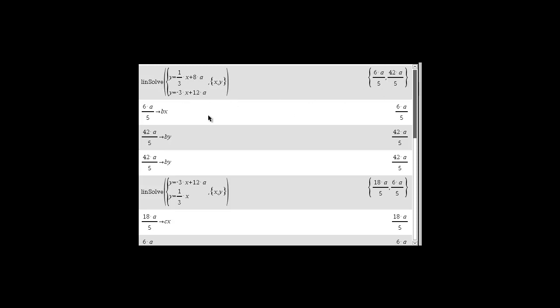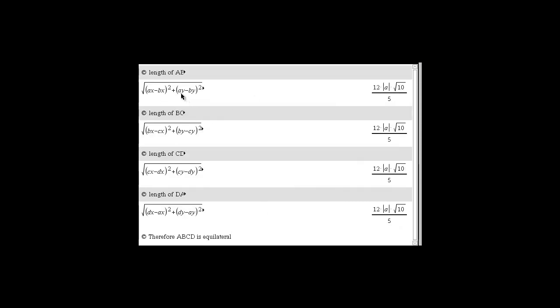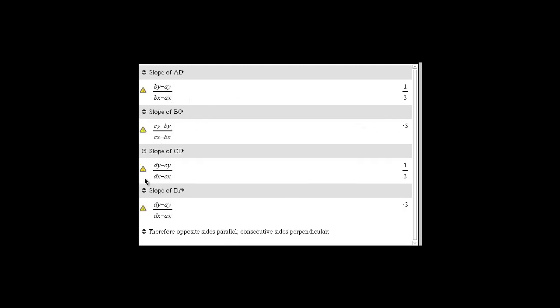And noted that like the Bx coordinate, the By coordinate and so on. I then used the distance formula to find the length of each of those sides and it turned out always to be 12 absolute A radical 10 all over 5, so it told me it was equilateral. I then used the CAS to find the slopes of all four sides and it turns out that they were opposites, and the consecutive sides were opposites and reciprocals of each other so they were perpendicular.